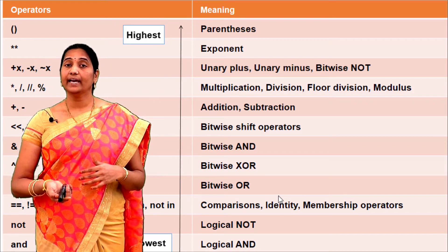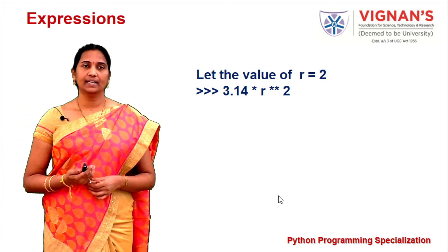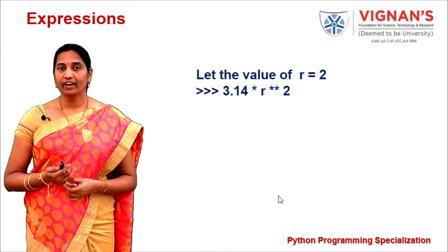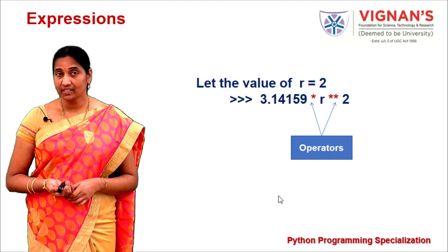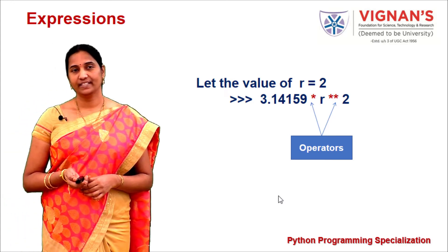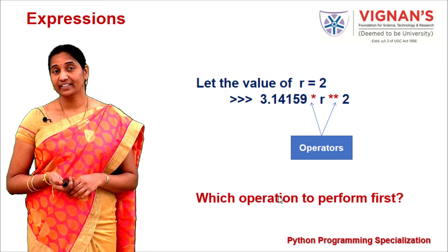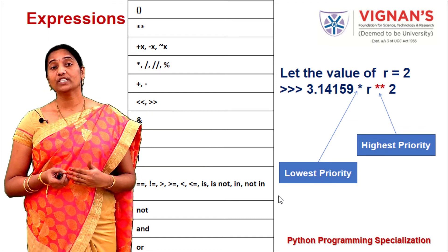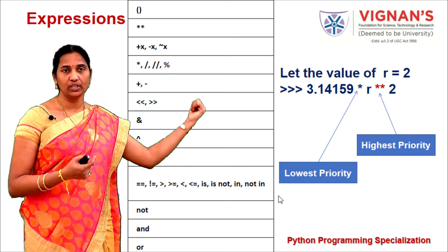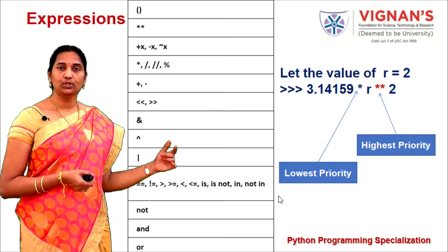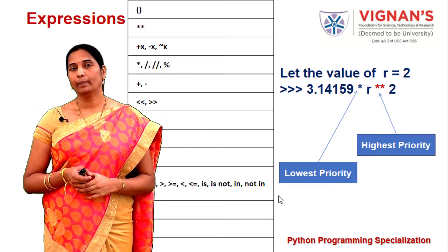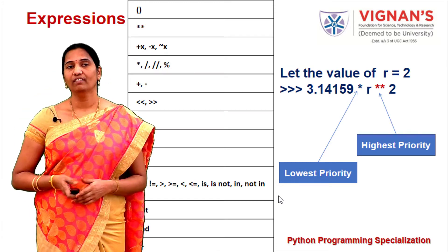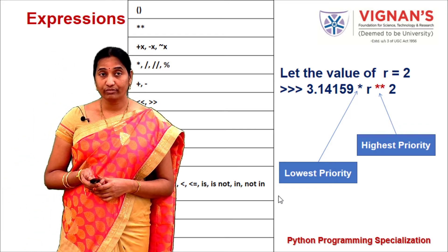Let's evaluate an example: r = 2, expression is 3.14 * r**2. There are two operators — multiplication and exponentiation. According to the precedence table, exponentiation has higher priority than multiplication, so evaluate r**2 = 2**2 = 4 first, then multiply 4 * 3.14 to get the final result.